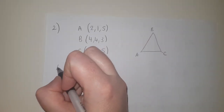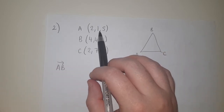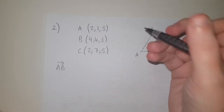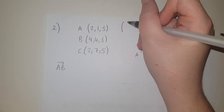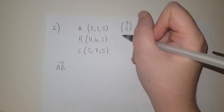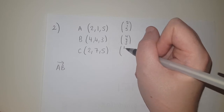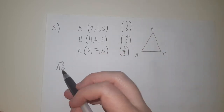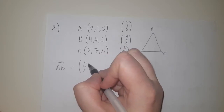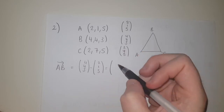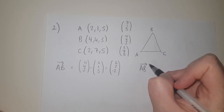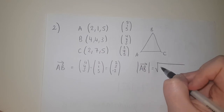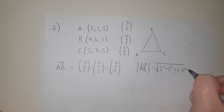The position vectors of A, B, C are just (2,1,5), (4,4,3), and (2,7,5) respectively. AB = B − A = (4−2, 4−1, 3−5) = (2, 3, −2). So the length of AB = √(2² + 3² + (−2)²) = √(4 + 9 + 4) = √17.